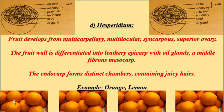The fourth type is hesperidium — examples are orange and lemon. It develops from a multicarpellary, multilocular, syncarpous, superior ovary. Superior ovary means the placement of the ovary is above the floral parts. Syncarpous means the carpels are fused together. Multilocular means it contains many chambers. The fruit wall is differentiated into a leathery epicarp with oil glands, a fibrous middle mesocarp with thread-like structures, and an endocarp that forms distinct chambers containing juicy hairs. In the picture of orange, you can find the epicarp and mesocarp forming the skin, and the endocarp forming the pulpy region.